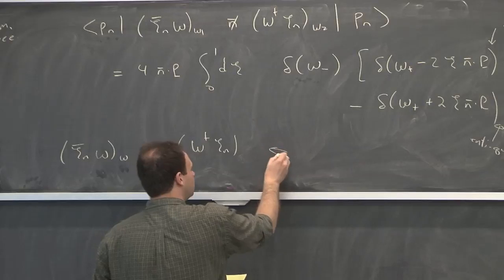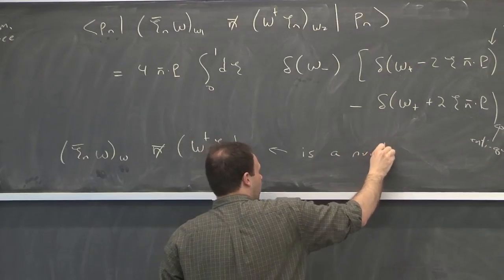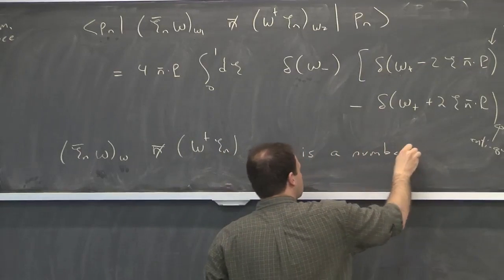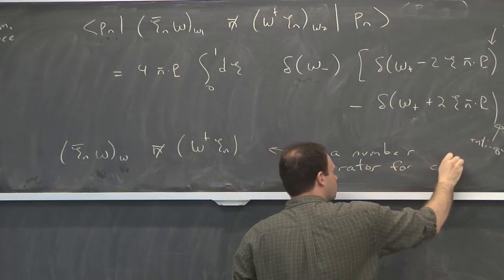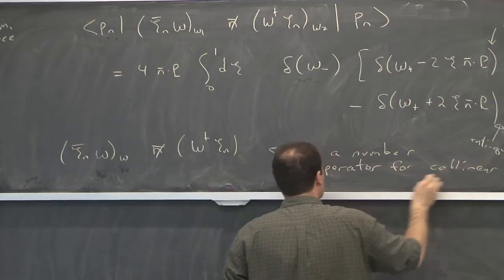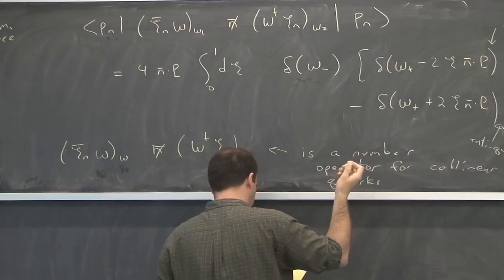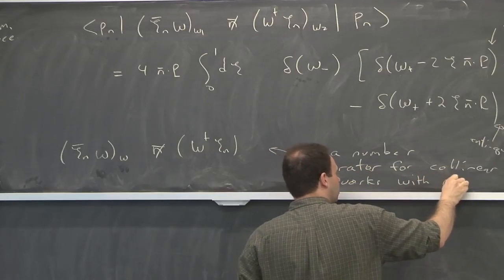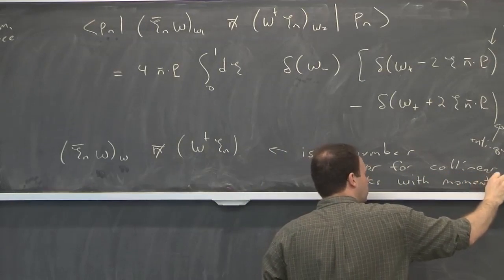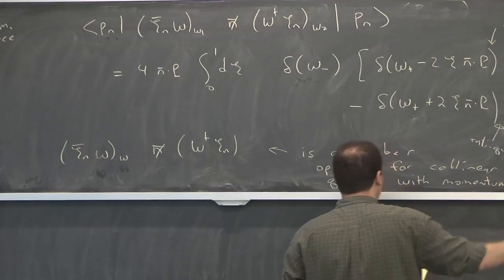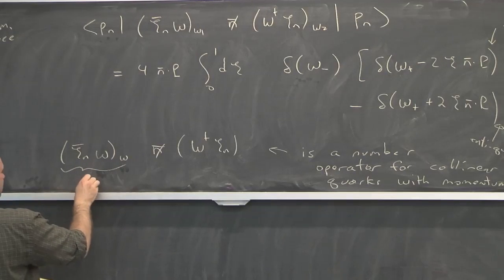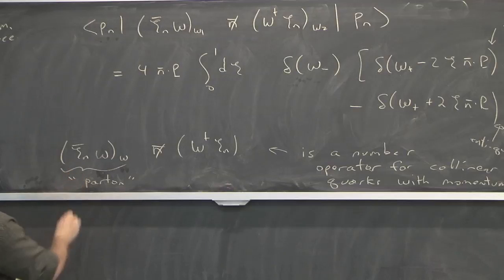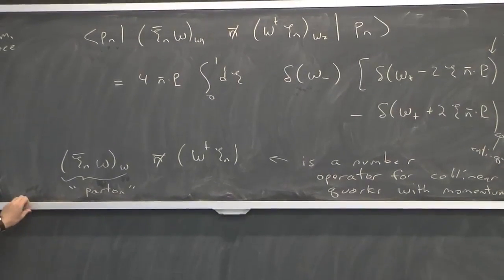This operator is like a number operator for quarks, where you're thinking about momentum, a number operator with momentum, omega. And if you want to think about there being some kind of field for a parton, this is about as close as you can get. So this quark field dressed by a Wilson line is kind of like a parton in the parton model.